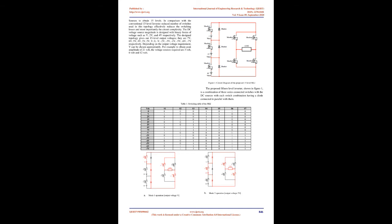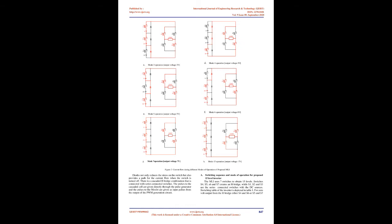Multilevel inverters (MLI) are ones which can give out a stepwise output waveform with the use of power electronic switches, power diodes, and DC voltage sources which might be series/parallel connected PV cells, a renewable source, or a battery. Multilevel inverters not only produce low harmonic distortion but also decrease the dV/dT stresses on the equipment and can reduce electromagnetic compatibility issues. Three different types of topologies are available in MLIs: diode clamped, flying capacitor, and cascaded multilevel inverters.